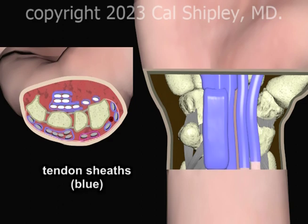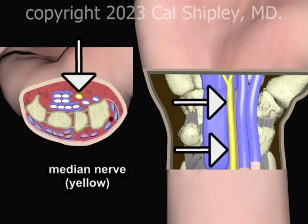Surrounding the muscle tendons are synovial sheaths, noted in blue here. The sheaths isolate the tendons and allow for friction-free movement in this crowded anatomical compartment. The median nerve lies atop the tendon sheaths, approximately in the midline.